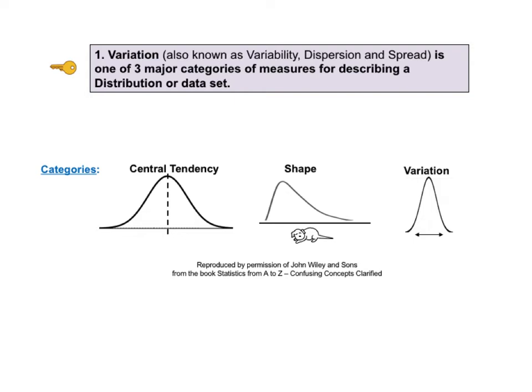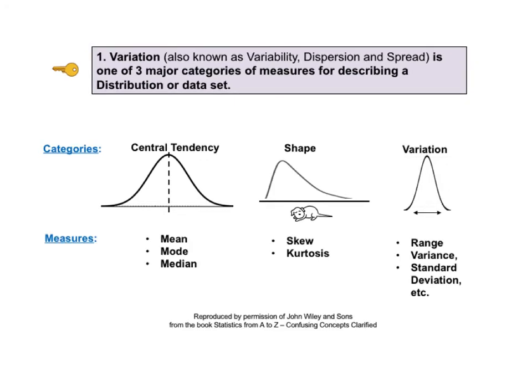There are different measures under each of these three categories. To describe the center of a distribution, we could provide a number for the mean, or for the mode, or for the median. For shape, the number for skew tells us the direction toward which the long tail is skewed and how prominent the distortion is. Kurtosis is a measure of how pointy a distribution is. Variation has more measures than the others, including the range, variance, standard deviation, and others.